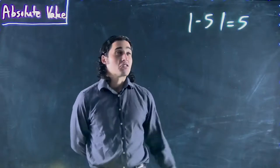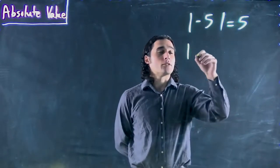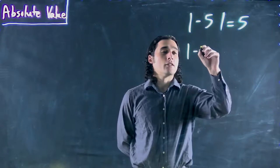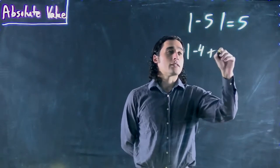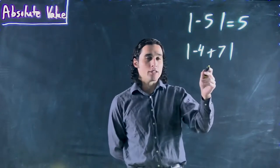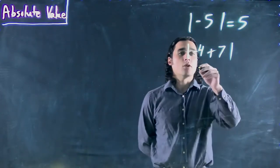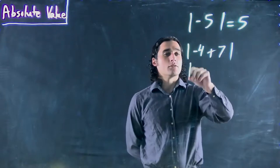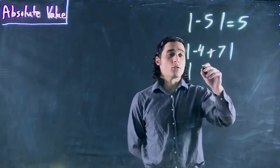Now, we could also look at something like absolute value of minus 4 plus 7. You have to evaluate what's in here first. So in this case, what we might get is minus 4 plus 7, or 3.